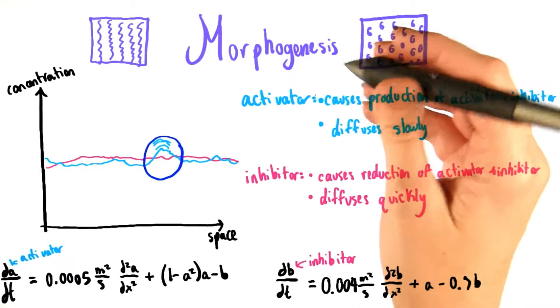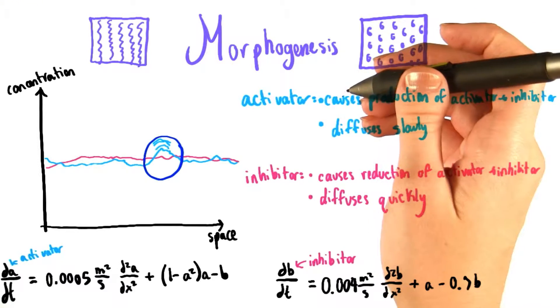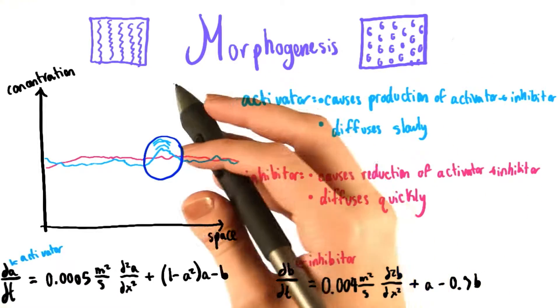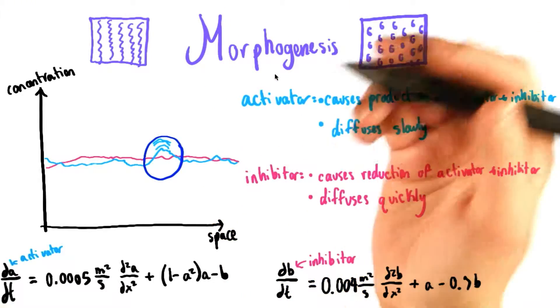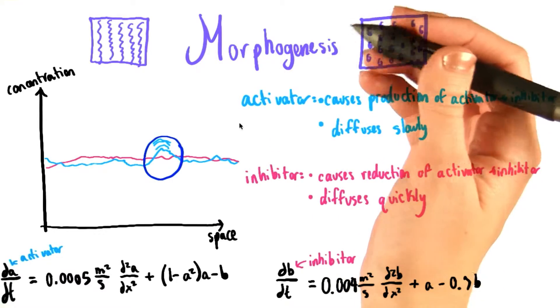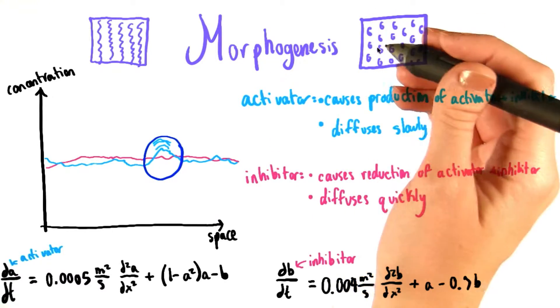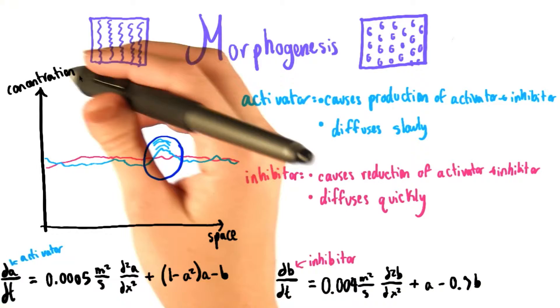And now we have our final exam question, or rather our final, final exam question. This one is about something called morphogenesis. This relates to how an organism knows where to grow its legs or where to form colored stripes on its coat and things like that. This really concerns pattern formation then.